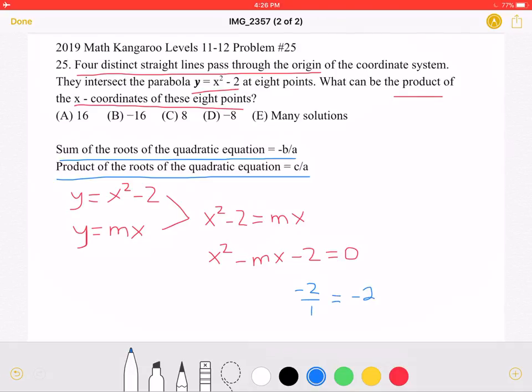Because we have 4 lines, we would have negative 2 to the 4th power, as we have this product 4 times, which would be equal to 16.